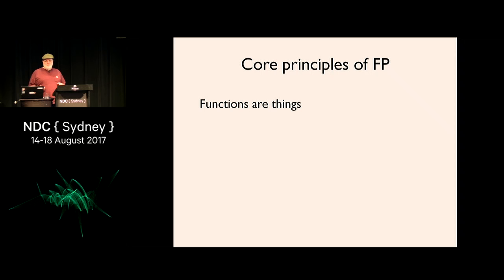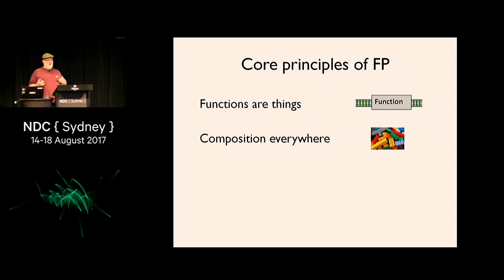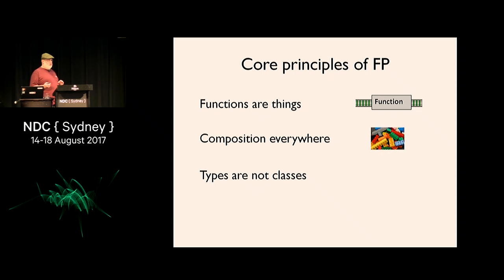Let's start with some core principles - the most important things to understand about functional programming. First, functions are things. In the OO world we differentiate between methods and data, but in functional programming they're just things like everything else. Composition everywhere - like Lego, gluing things together to make bigger things. No inheritance, just composition. And types are not the same as classes in OO - it's more like sets.